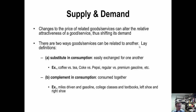Complements in consumption are goods that are consumed together — if you consume one, there's a good chance you're consuming the other. Examples include college courses and textbooks, left shoe and right shoe, and computers and keyboards.